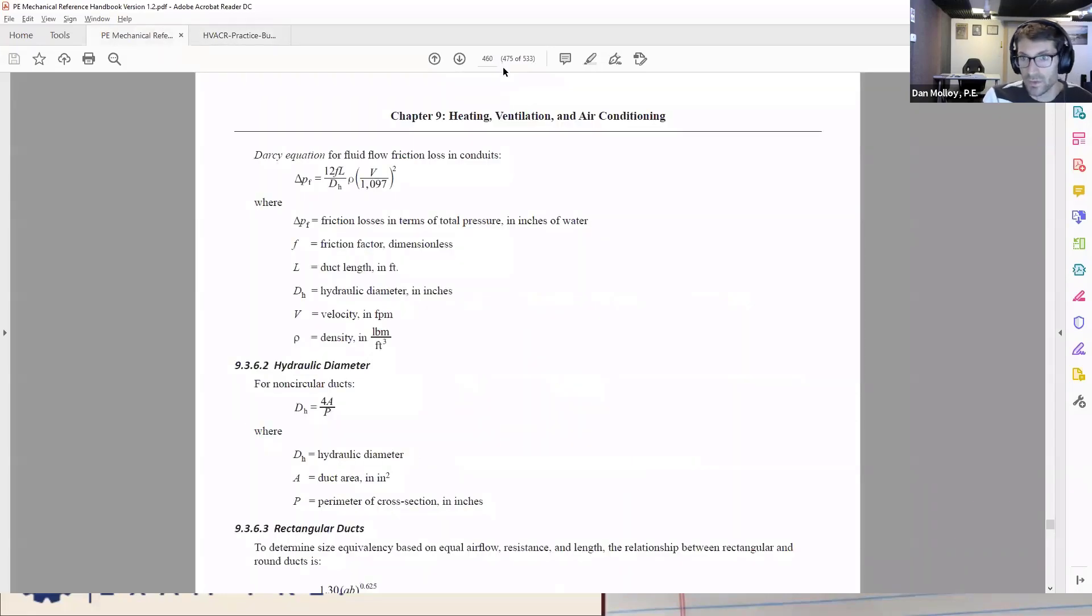So let's go straight to 460. Here's the equation. This says that the friction loss should be 12FL over hydraulic diameter times density times this term velocity over 1097 squared. And unlike most equations where we write out all the units and make sure everything cancels, this is one of those pre-formulated equations where we put everything in the specified units in the first place.